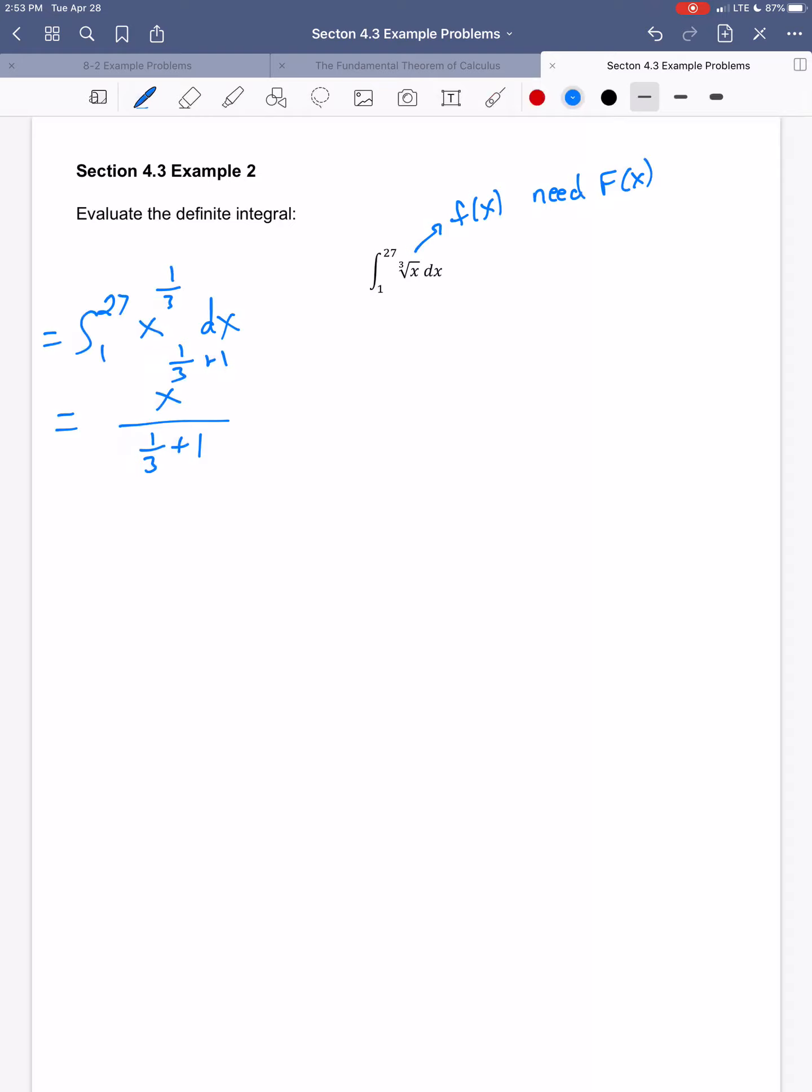Of course, 1 is the same thing as three-thirds. Oh, I forgot this then. That has to be evaluated as x goes from 1 to 27.